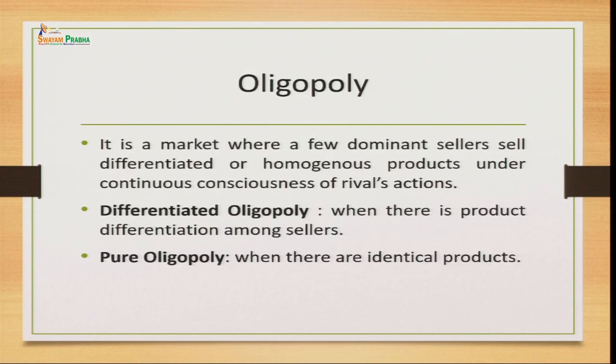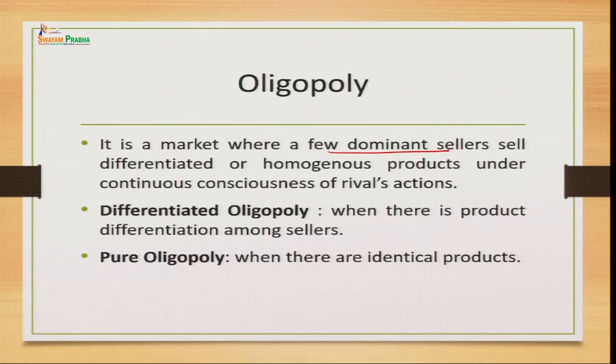This is the market where we have few dominant sellers. They are not very large in number but they are dominant sellers who sell differentiated or homogeneous products. In oligopoly, firms can produce products which are of similar nature — homogeneous goods or heterogeneous goods. If the firms have different products, we call it differentiated oligopoly. Whereas if we talk about pure oligopoly, the products sold by these firms are of similar and identical nature.